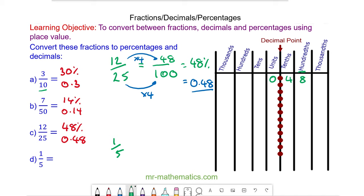And question d, 1/5, we can write as a fraction over 10, which is 5 times 2 and 1 times 2, which is 2/10. So we have 0 units, 2 tenths and 0 hundredths, which as a percentage is 20/100, and as a decimal 0.2.